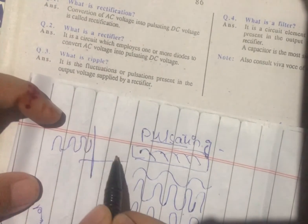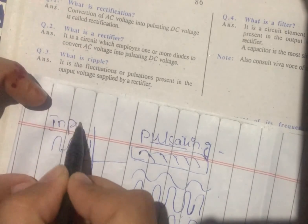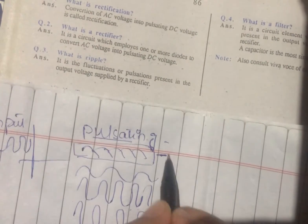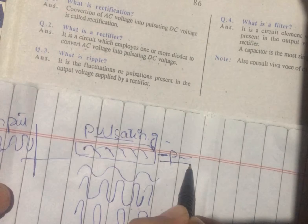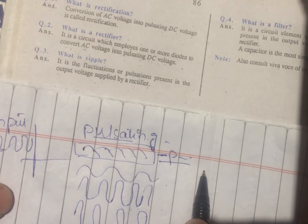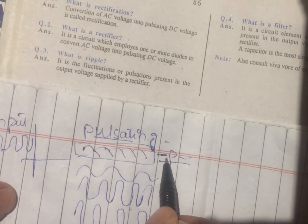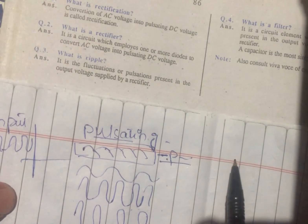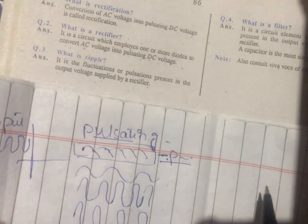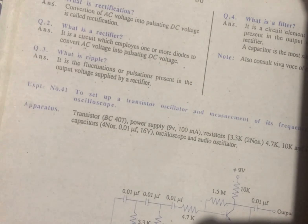When it was input and it came to the output, then it came as pulsating. The presence of pulsating in output voltage is known as Ripple.